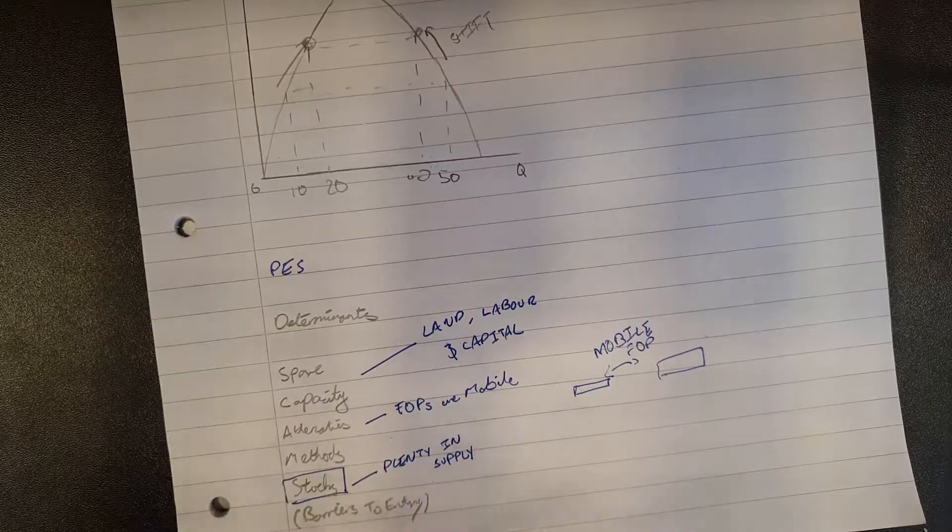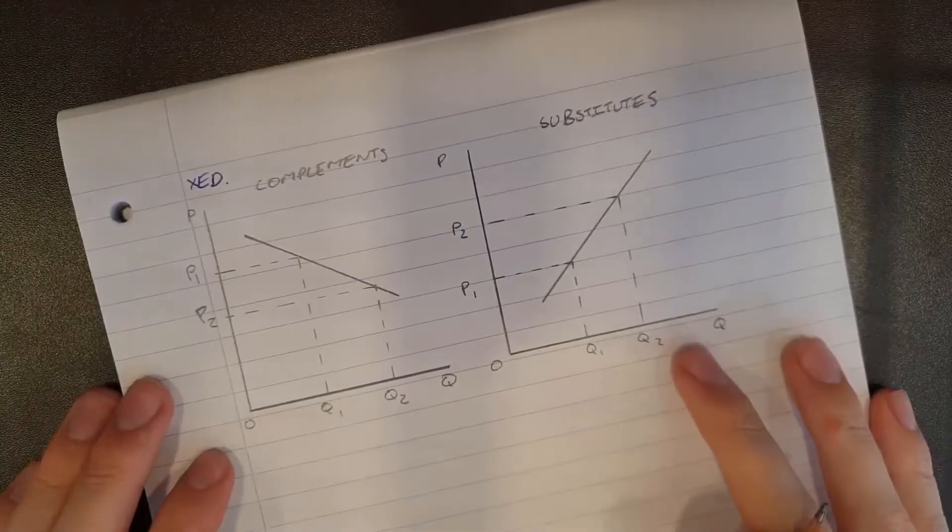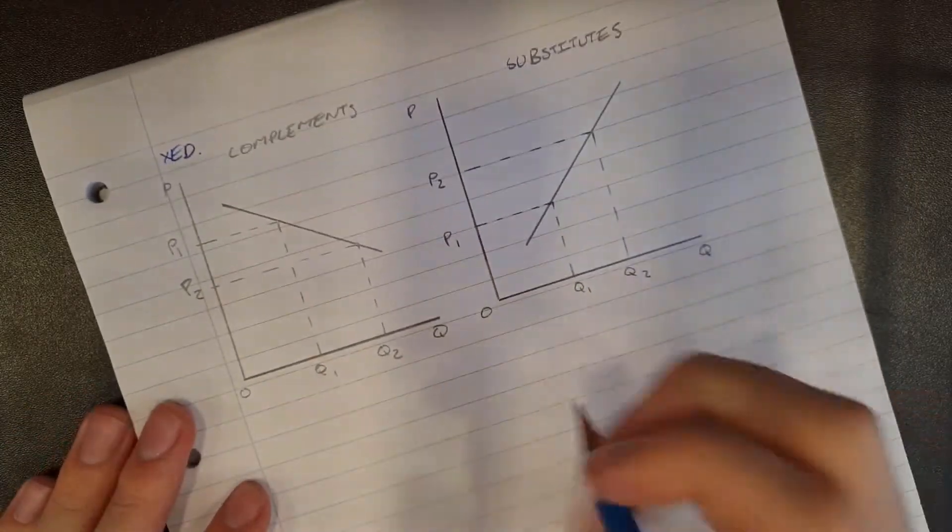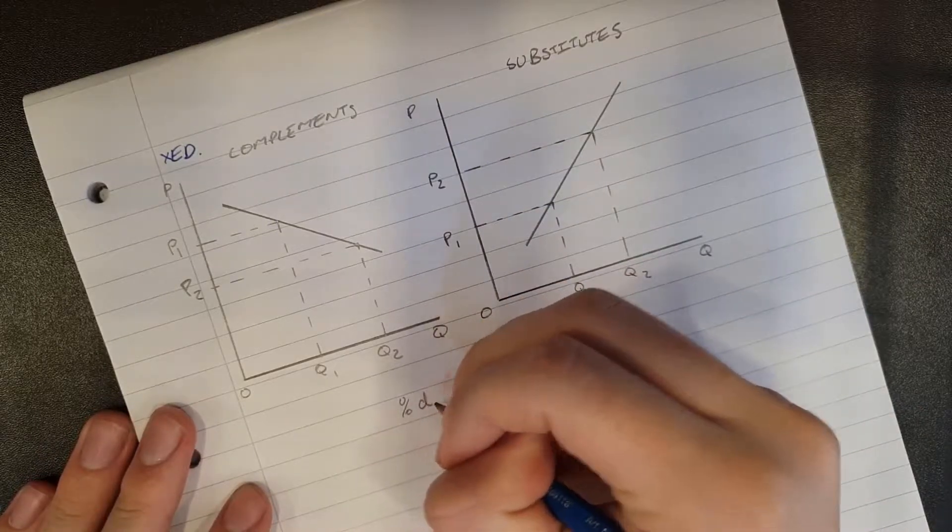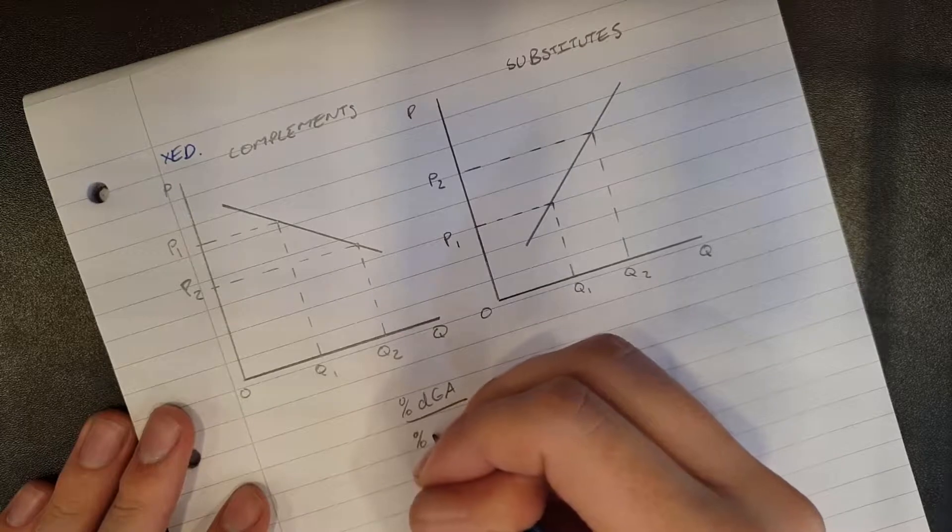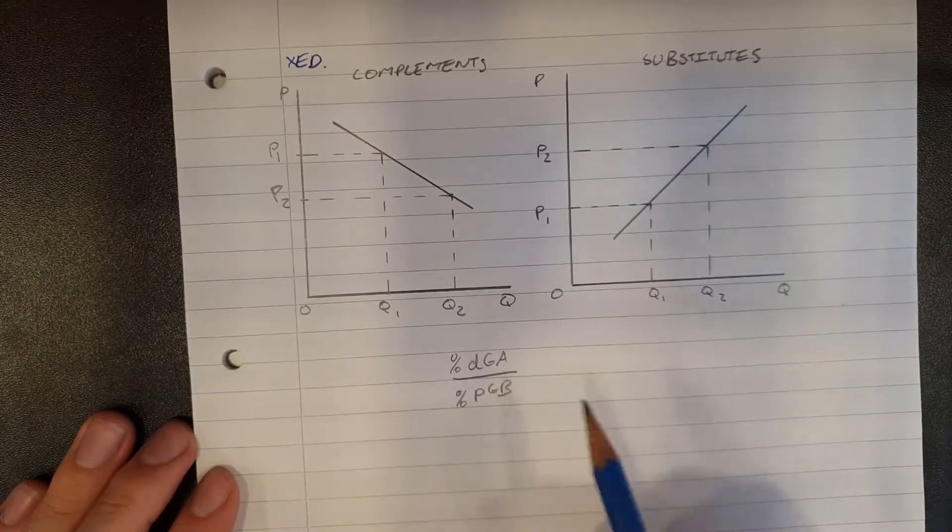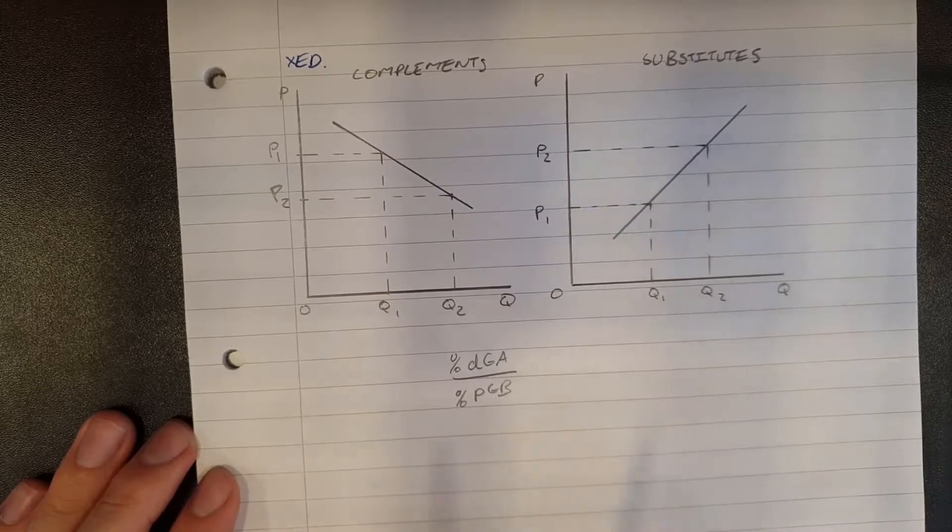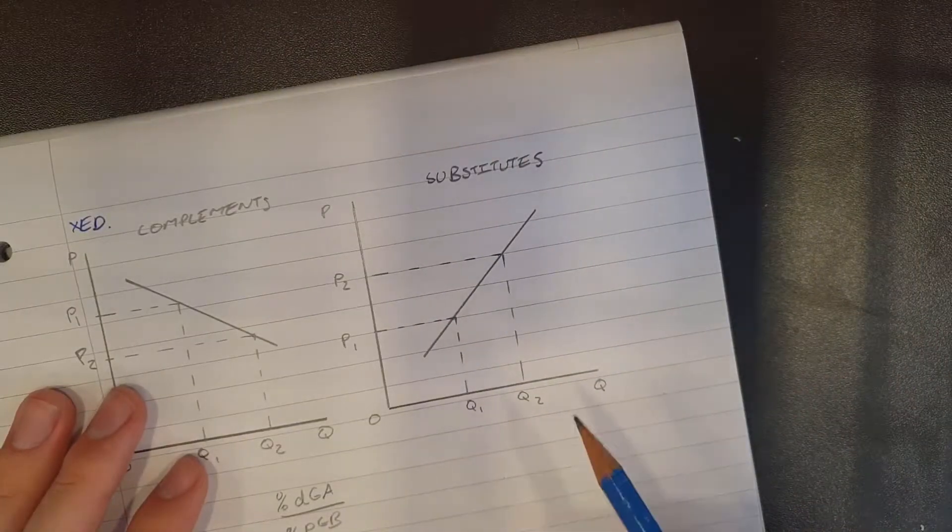Right, now we'll move on to cross price elasticity. Okay, so this is cross price elasticity which is calculated by percent change in demand for good A over percent change in price of good B. It measures the elasticity of demand for one good against a price change in another good. So we're going to start over here with substitutes.